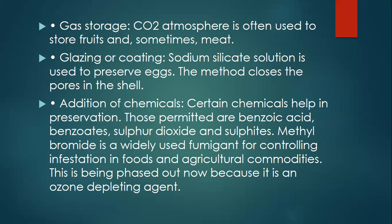Addition of chemicals: Certain chemicals help in preservation. Those permitted are benzoic acid, benzoates, sulfur dioxide, and sulfates. Methyl bromide is a widely used fumigant for controlling insect infestation in foods and agricultural commodities. This is being phased out now because it is an ozone-depleting agent. Thank you.